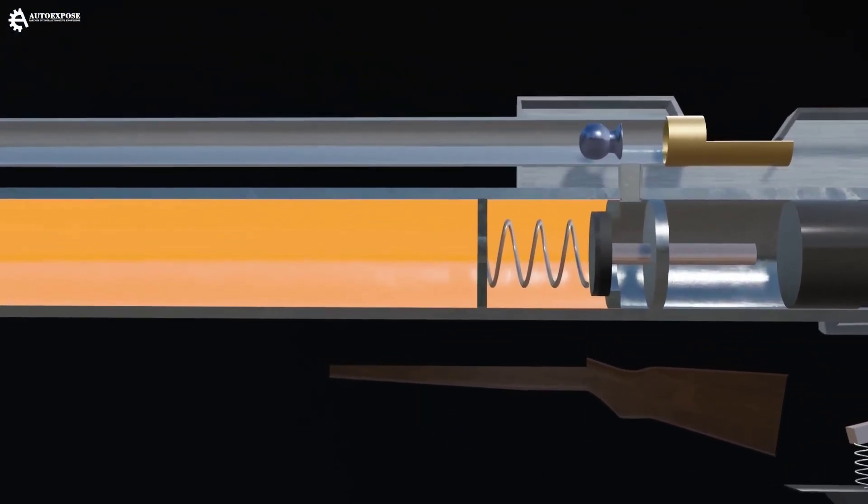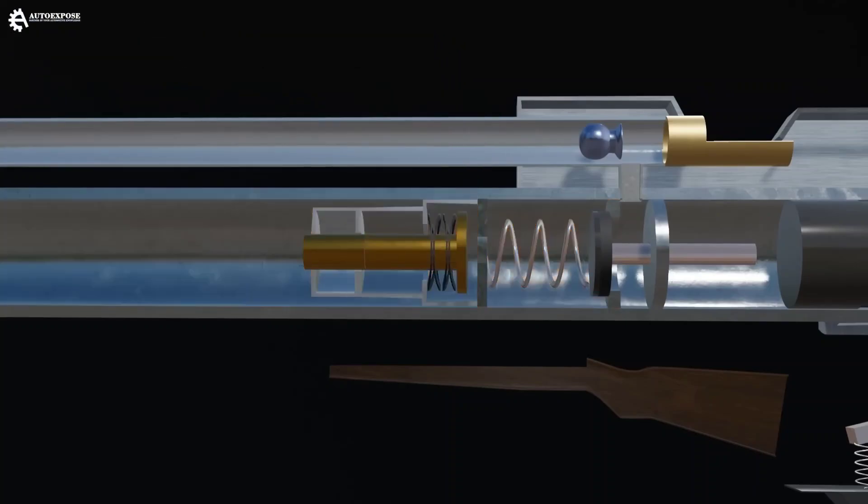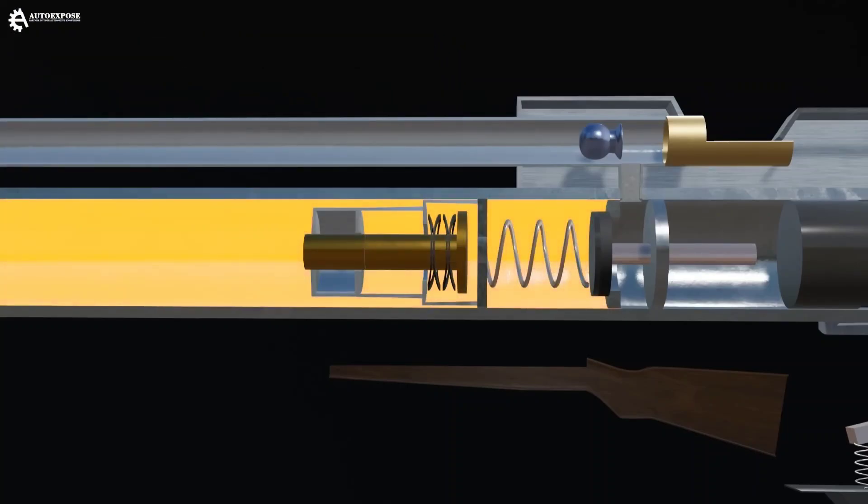In front of the main valve, there is one more valve, namely the regulator valve. The goal is to stabilize the air pressure.